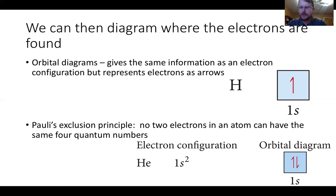The orbital diagram actually shows the electrons and where they are — it gives the same information as your electron configuration, but you represent electrons as arrows, so it's a slightly more detailed representation. Let's look at the board for an example of why helium's orbital diagram looks the way it does.